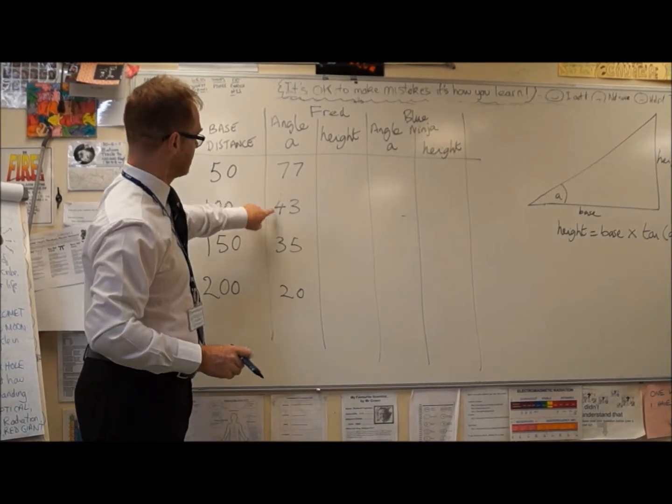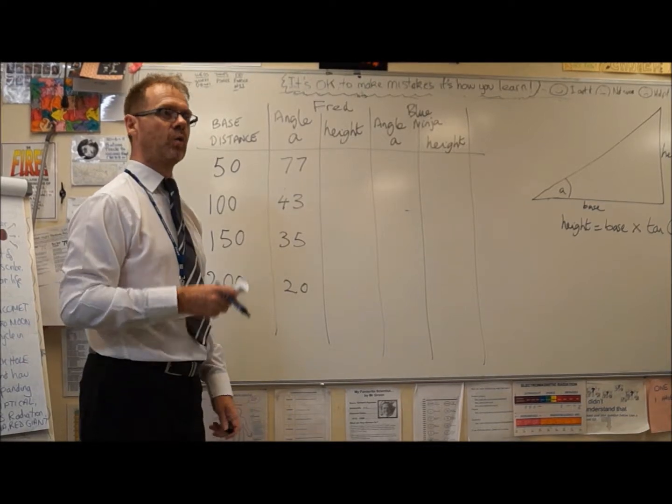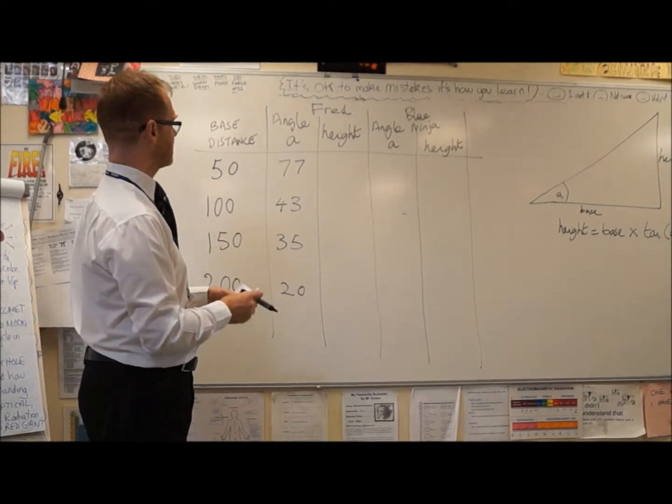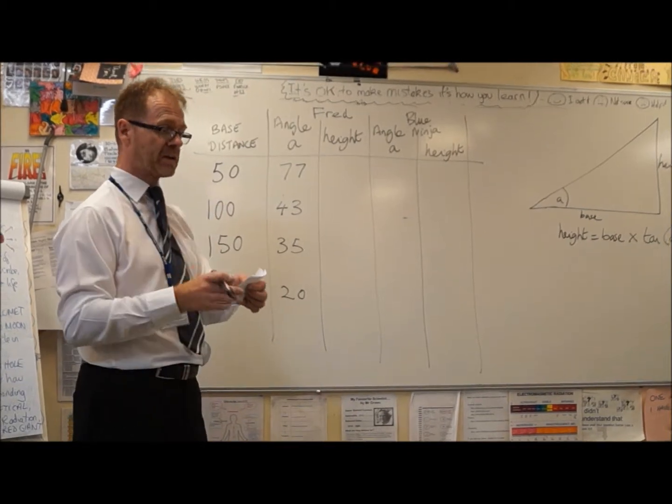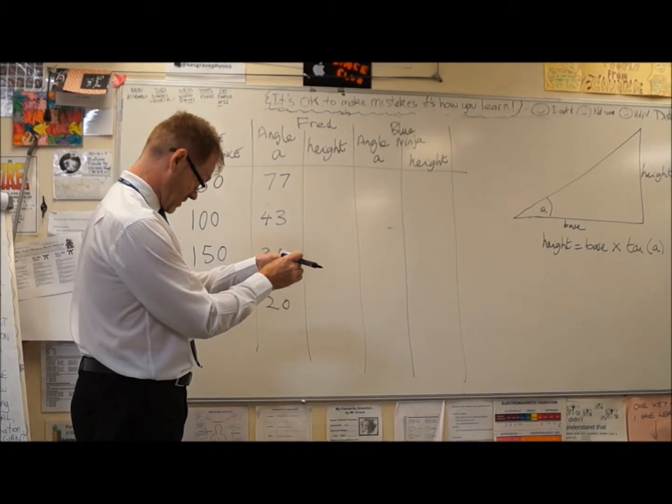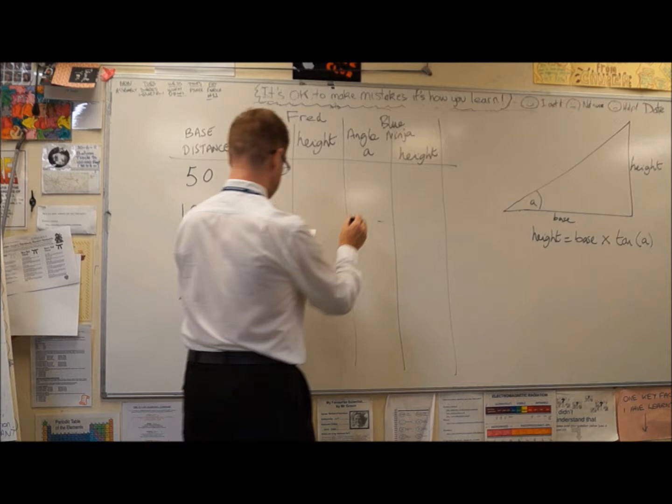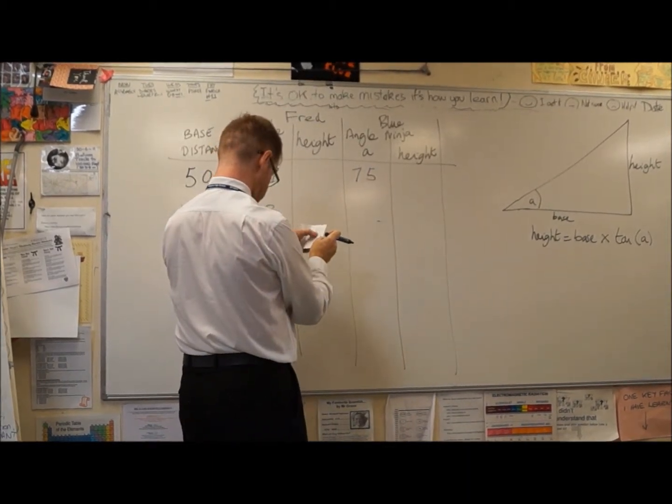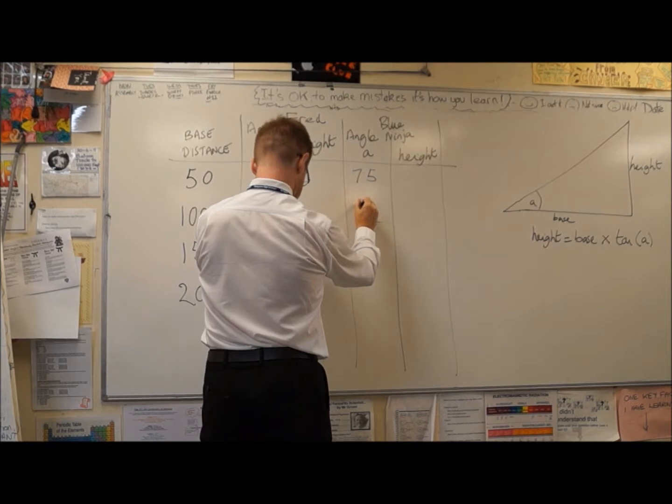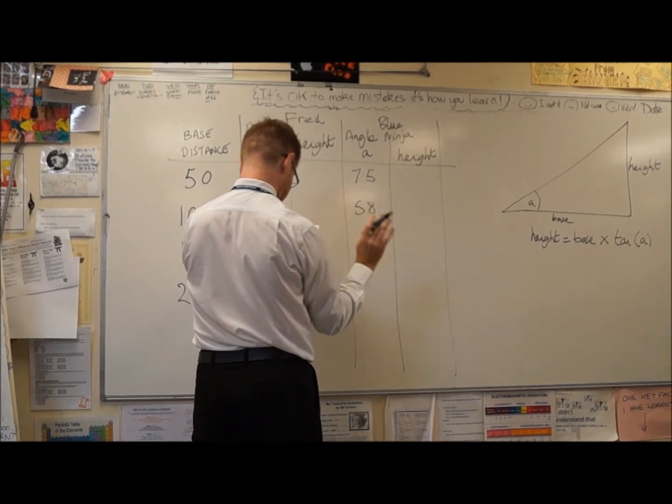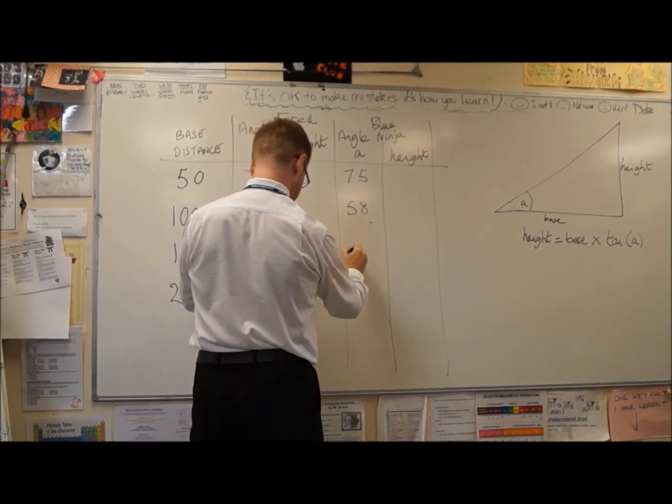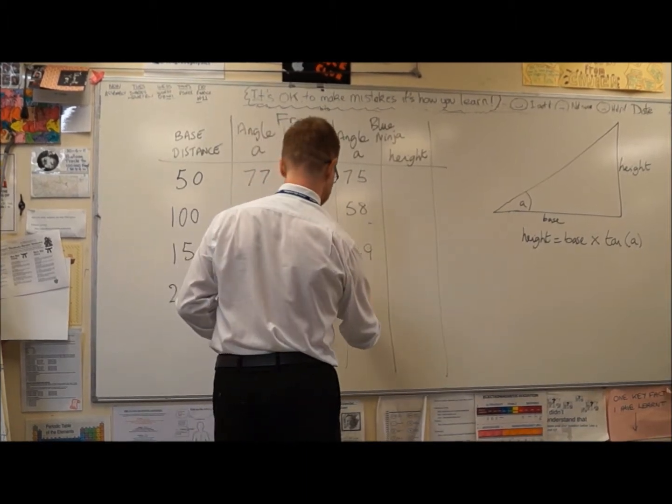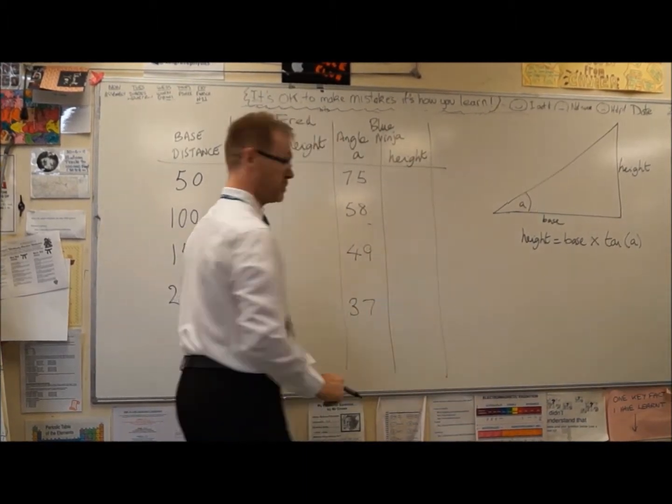Before we do any calculations, I'll go on to Blue Ninja and record the results for there as well. So that's 75 degrees at 50, 58 degrees at 100. Again, that was confirmed by two people. 49 at 150. Again, by two people. And 37 degrees at the 200 metre mark.